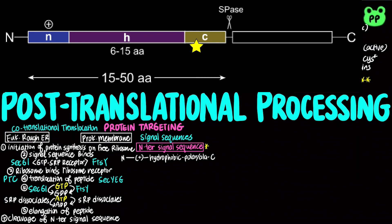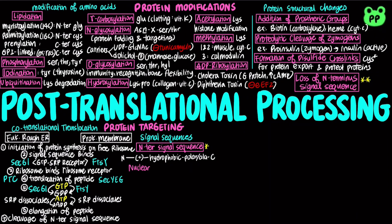Signal sequences that will be cleaved after reaching their destination are indicated with asterisks. Proteins targeted to the nucleus contain nuclear localization sequence, abbreviated as NLS, which contains internal basic amino acids such as arginine, lysine, and proline. NLS is not cleaved when it reaches its destination.